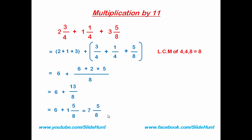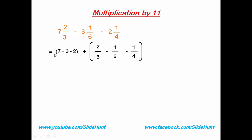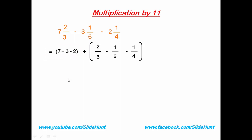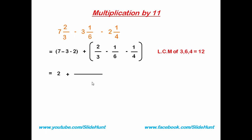Next, we learn how to subtract mixed numbers. Here we take an example to see how to solve this problem. Same as before, separate the whole numbers and fraction values. The whole numbers are 7, 3, and 2. So I'm going to write 7 minus 3 minus 2, then add a plus sign for the fraction values. Solving: 7 minus 3 is 4, and 4 minus 2 is 2. Now take the LCM of the denominators — LCM of 3, 6, and 4 is 12.